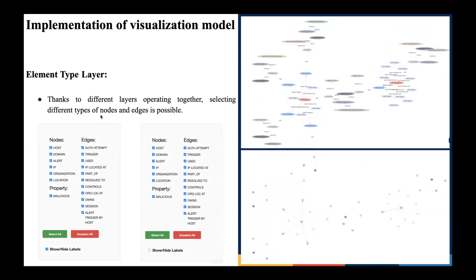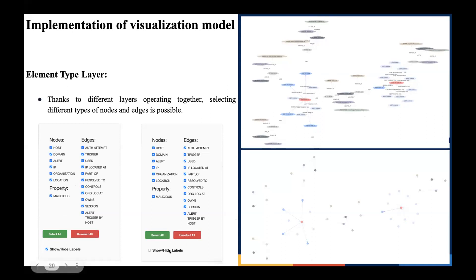We have also implemented these different layers to operate together so that we can see different properties selected at the same time. With show labels on, the labels are shown and all nodes and edges have distinct colors. When we deselect that checkbox, it gives the zoom-out view where all nodes are the same size, circular, and there are no labels on any of them.